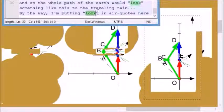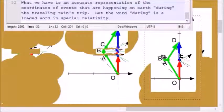By the way, I'm putting look in air quotes here. What we have is an accurate representation of the coordinates of events that are happening on earth during the traveling twin's trip, but the word during is a loaded word in special relativity.